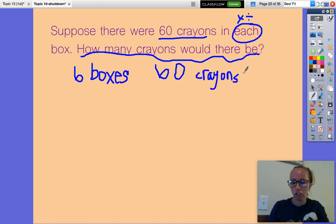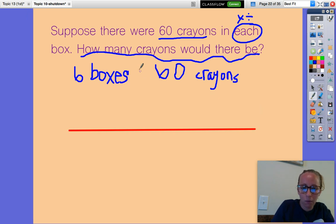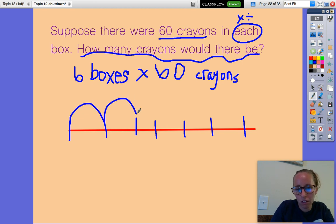I'm going to pick a new strategy just so that I can practice them all. I'm going to draw an open number line. I want to figure out six boxes of 60 crayons. I know that we're multiplying because we don't have the total. So I have six jumps of 60. So one, two, three, four, five, six, and each jump is 60.